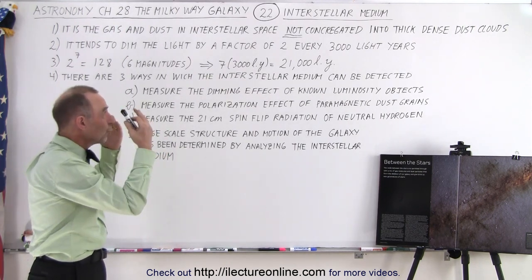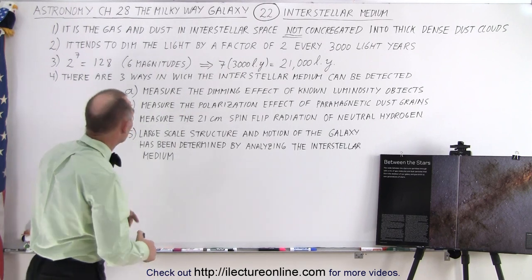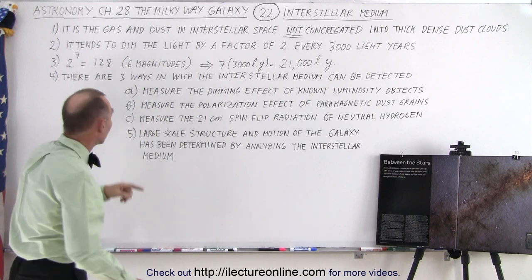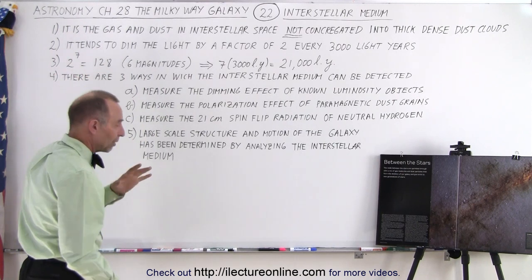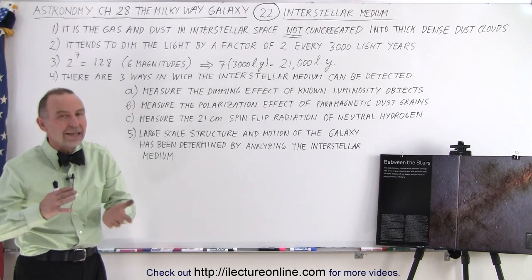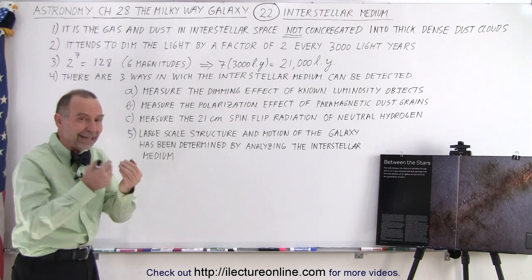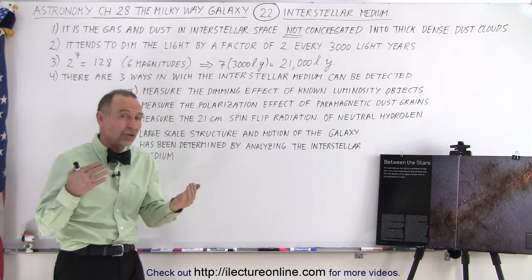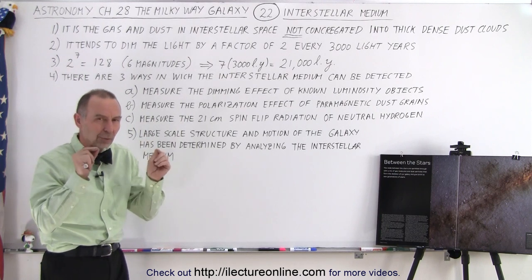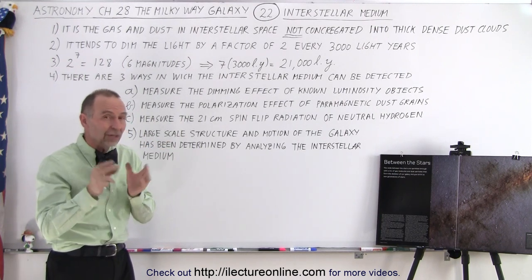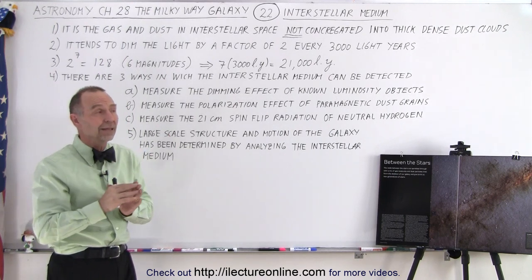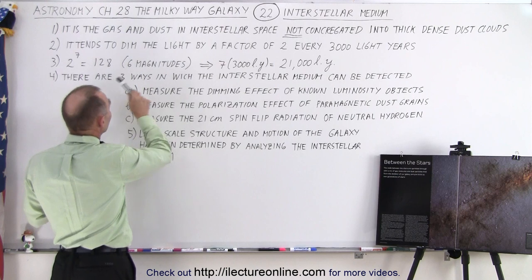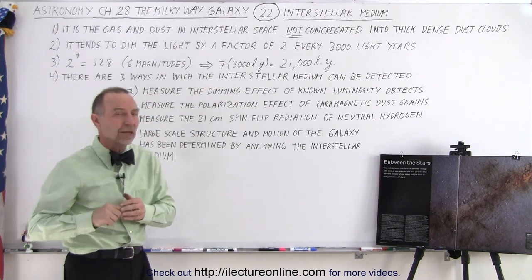Let's say something is 21,000 light years away — how much has the light dimmed? We take the number 2 and raise it to the 7th power, because 21,000 is 7 times 3,000. So 2 to the 7th power is 128. The light has been dimmed by a factor of 128, which is roughly 6 magnitudes. That means the light we see from an object 21,000 light years away is 6 magnitudes dimmer than it actually is, and we have to take that into account.